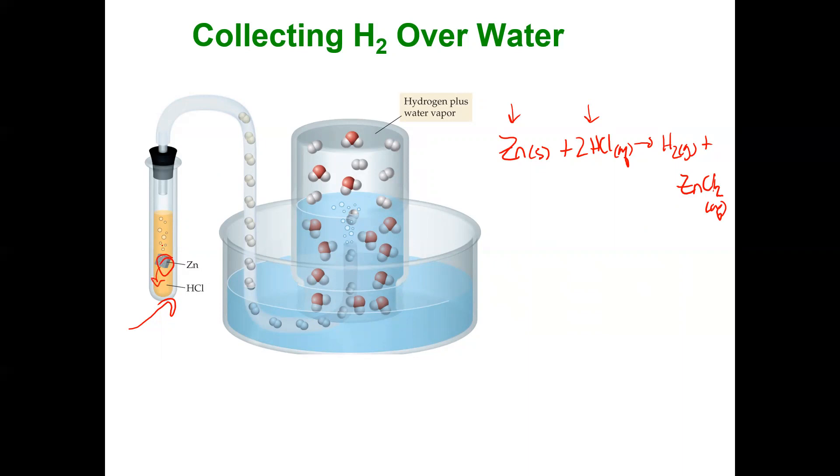The hydrogen gas could be collected through water in this trough and displace the water downward. But you have to understand that the liquid water also vaporizes. So the total pressure in that volume, the total pressure in that volume, is the pressure of the gas, in this case the hydrogen gas, and the water vapor that's vaporizing.